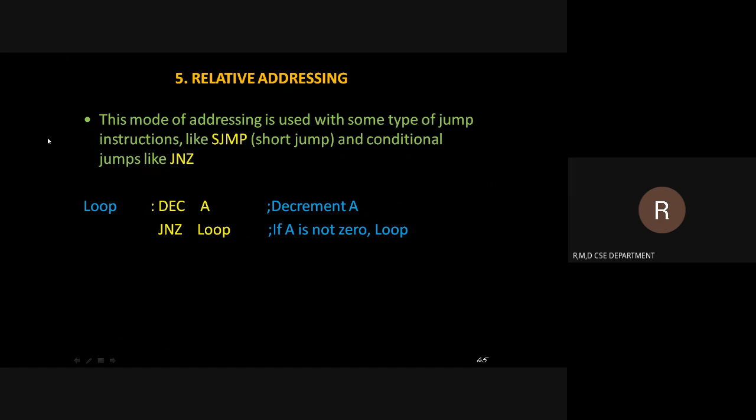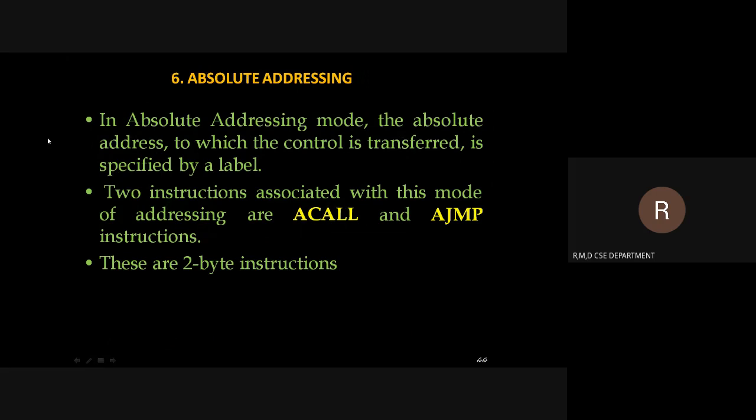Next is the relative addressing mode. This mode of addressing is mainly used for jump instructions — for example, it decrements A and then jumps if not zero. If the condition is not zero, the loop is executed; if the condition is true, it comes out of the loop. That is called relative addressing. Absolute addressing transfers control to an address specified as a label.